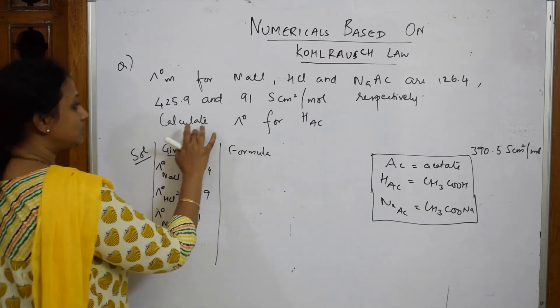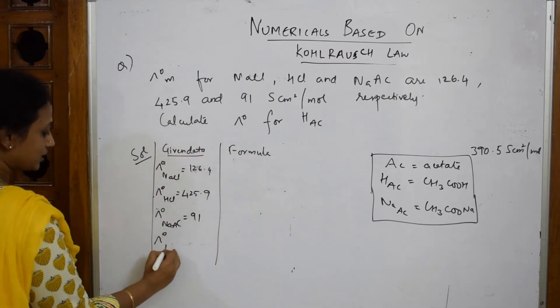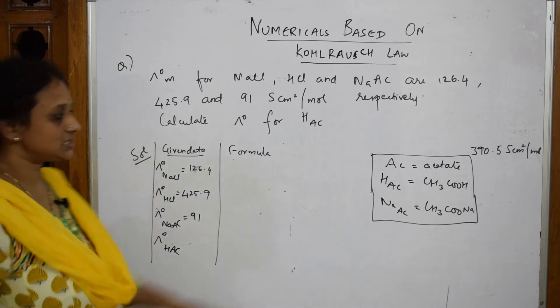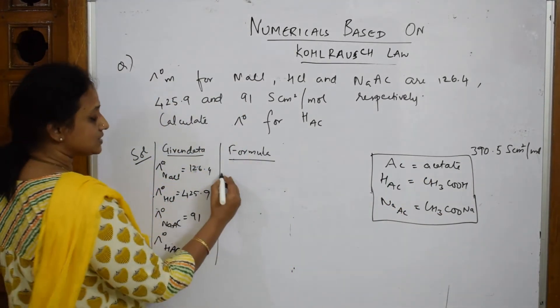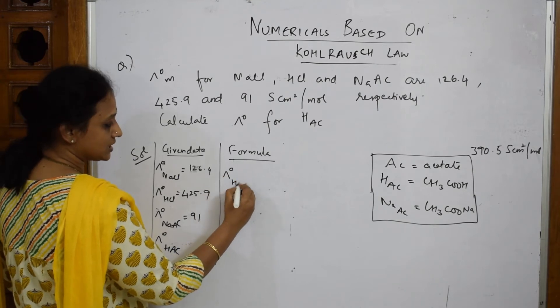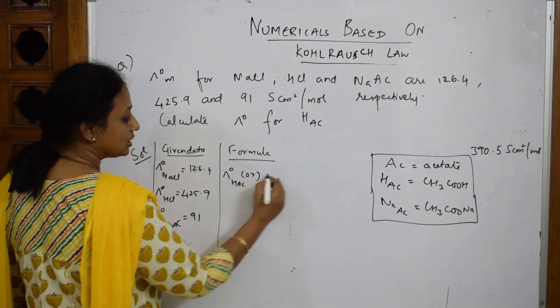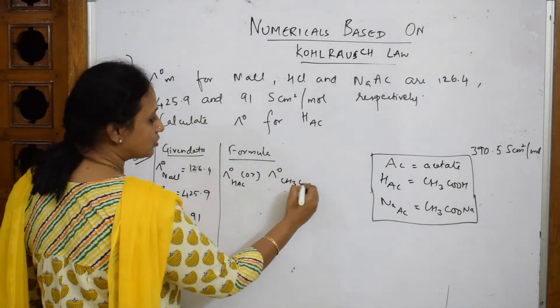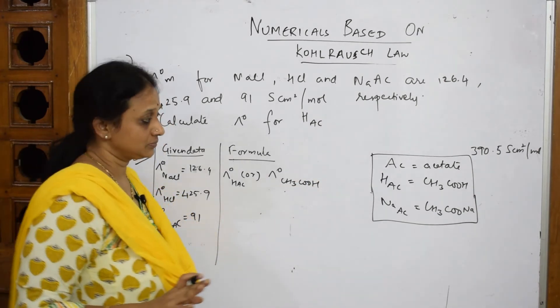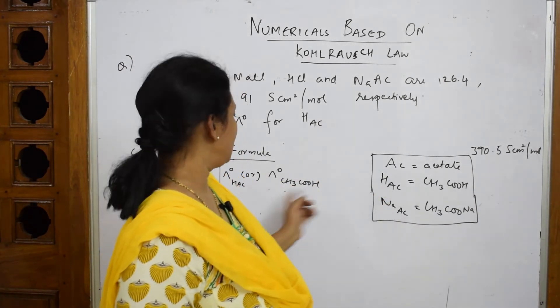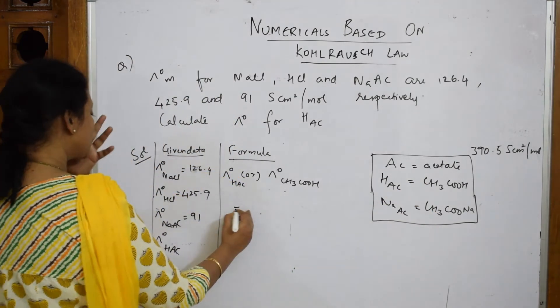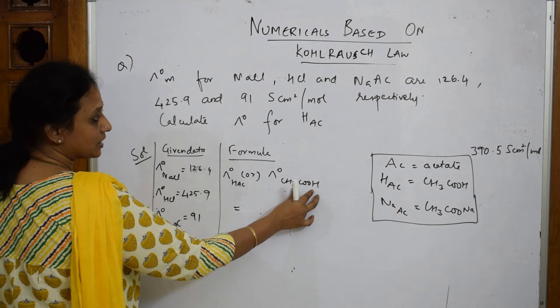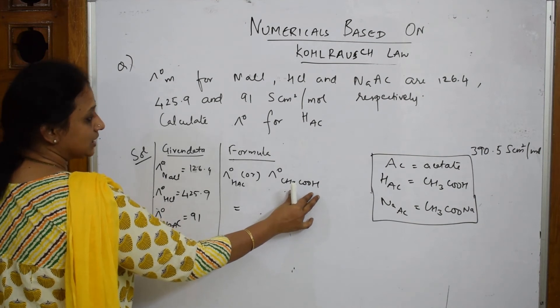Now what should I find out? I have to find out lambda not for HAC. What is HAC? Acetic acid. I have to find out. In the formula, when I have to write, just see: lambda not HAC or lambda not CH₃COOH, both are same. Look here, HAC acetic acid and CH₃COOH both are same. Now what should I find out? I have to get this answer.